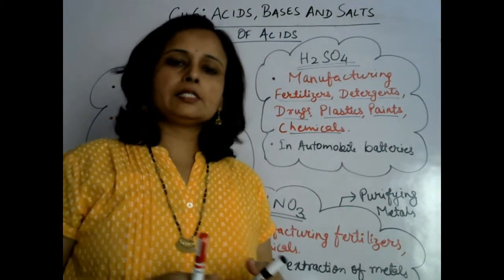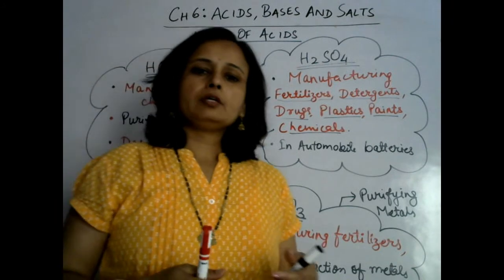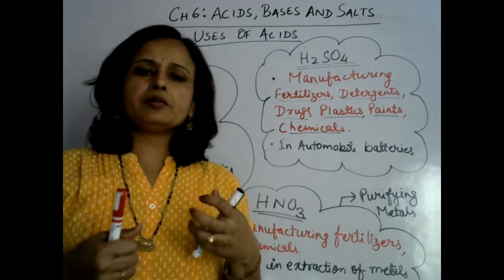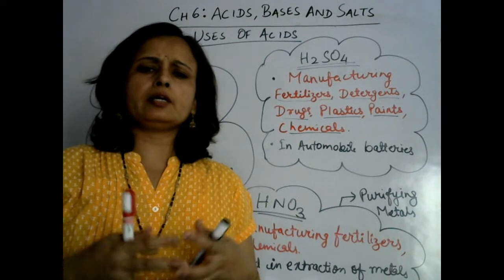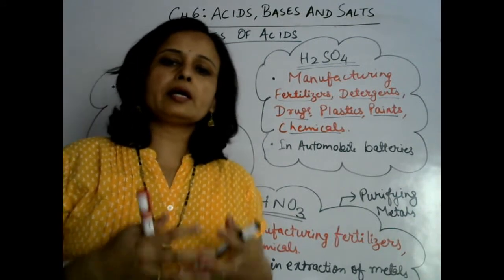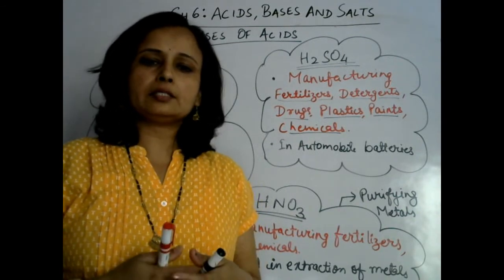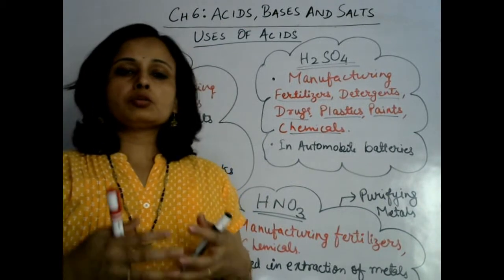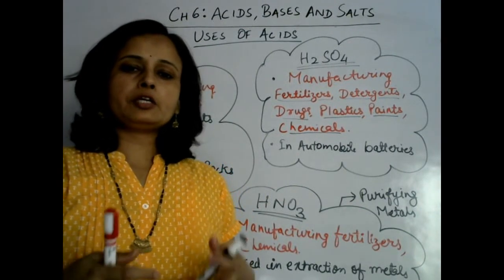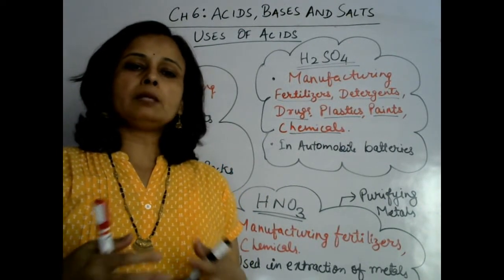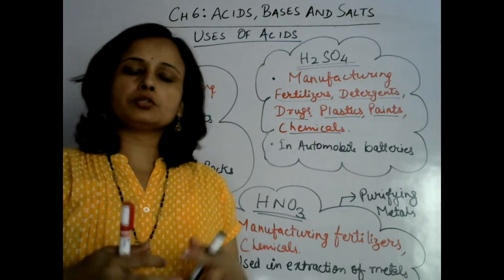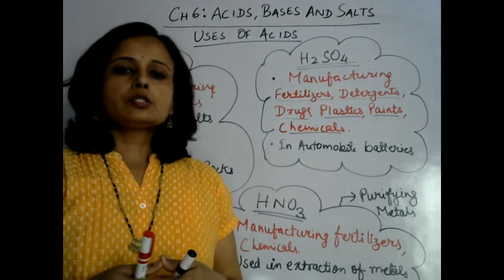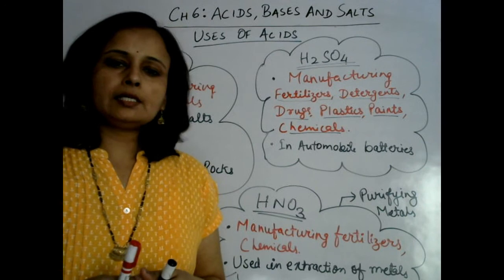Sulfuric acid is mainly used in manufacturing of so many kinds of substances and different kinds of chemicals. It is also used in automobile industries, specifically in the manufacturing of automobile batteries.